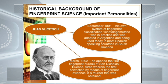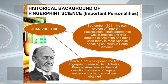Next personality is Juan Vucetich. He is an Argentinian police officer who researched on the science of fingerprints and corresponded with Galton. In September 1891, his own system of fingerprint classification, the Ichnophalagometrico, was in practice and was adopted in Argentina, and is being used today in most Spanish-speaking countries in South America. In March 1892, he opened the first fingerprint bureau at San Nicolás, Buenos Aires, wherein the first conviction by means of fingerprint evidence in a murder trial was obtained.